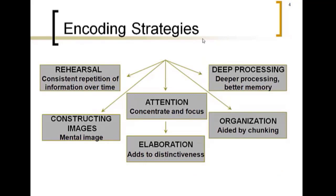So how do we get information into our brains? This is relevant for you as college students, but also if you're going to be teaching, you want to find ways to help your students encode information. First, rehearsal — the constant repetition of information over time. Rehearsal is especially helpful for keeping information in your short-term memory, but it's not always super effective for getting information into long-term memory, especially with a large amount of information. It works better for something small like a phone number.